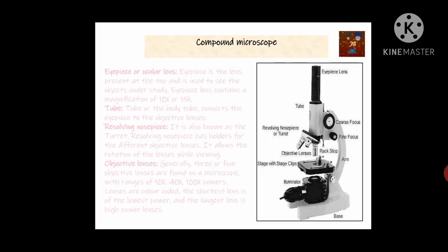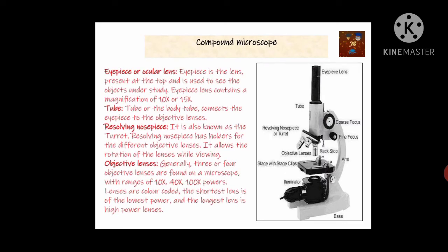The compound microscope has several parts. The eyepiece or ocular lens is present at the topmost part and helps us to see the object placed on the stage. The tube connects the eyepiece with the objective. The revolving nosepiece is a part that holds the different objective lenses — 10x, 40x, and 100x — in increasing order of power. All these lenses are fitted in the revolving nosepiece, which can be rotated.